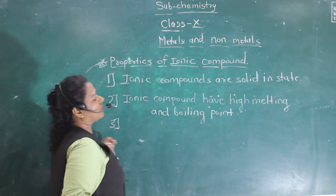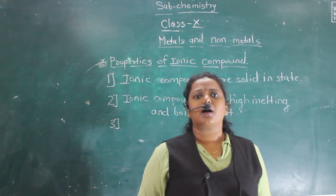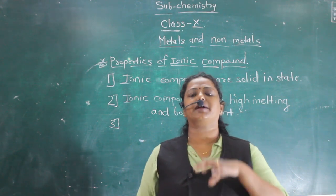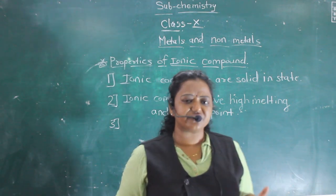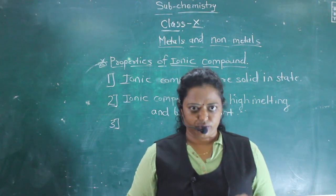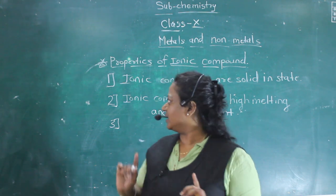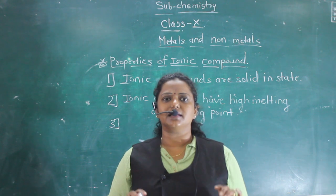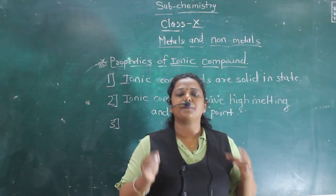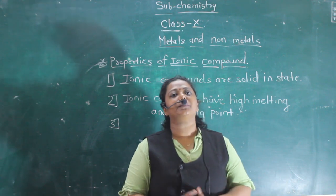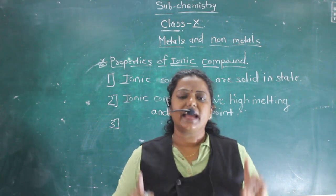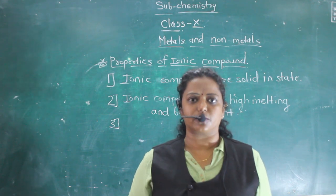The third property of ionic compounds is that most ionic compounds can dissolve in water to form an aqueous solution of that particular salt. For example, if you take common salt and dissolve it in water, it forms a salt solution. However, ionic compounds are not soluble in solvents such as petrol and kerosene - they are soluble only in water, not in petrol and kerosene.